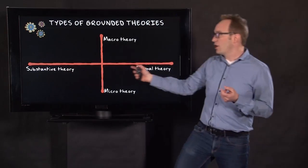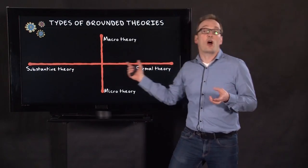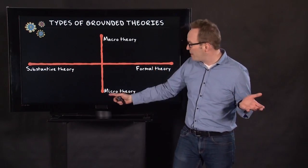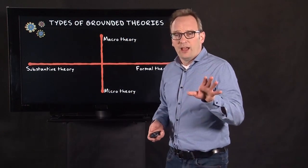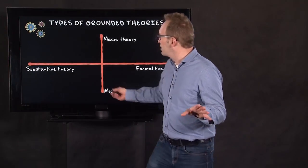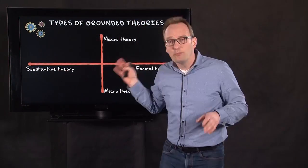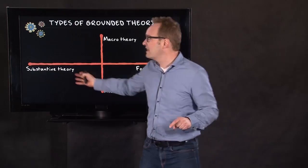First, there's the dimension of substantive versus a formal theory. And there's the dimension of micro theory up to macro theory. Usually, Grounded Theories start around here, more micro level based and substantive.